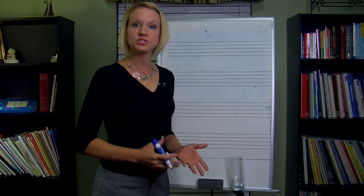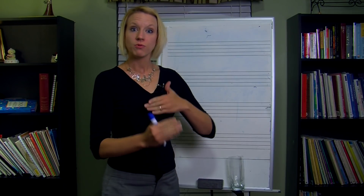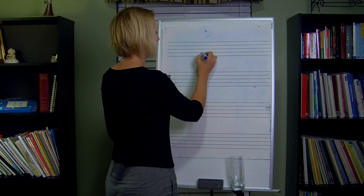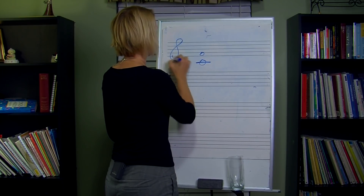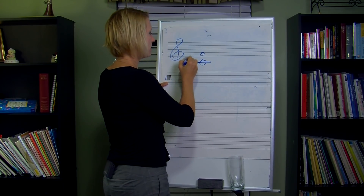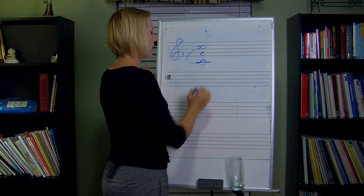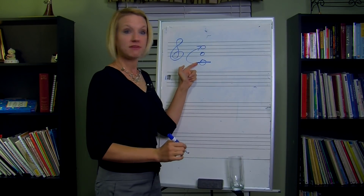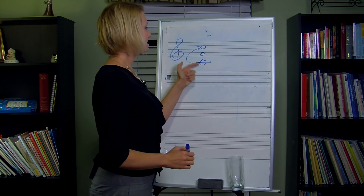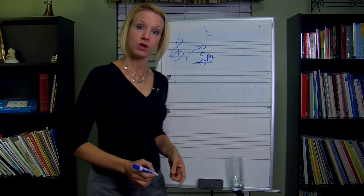Really, inversions are just flipping the notes — we're flipping the interval upside down. So if we had that C to that F, we're taking the C that's on the bottom and we're moving it up the octave. We're not just sticking it anywhere; we're moving it from a C to a C. Now you'll notice that C to F — this was a perfect fourth.